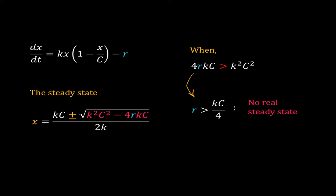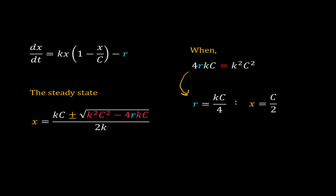Rearranging the terms, when r is greater than kc/4, the system does not have a real steady state. Now consider 4rkc equal to k²c². In this case we get 0 under the square root and there is only one solution for x. Rearranging, when r equals kc/4, the system has only one steady state at x equal to c/2. What about r less than kc/4?